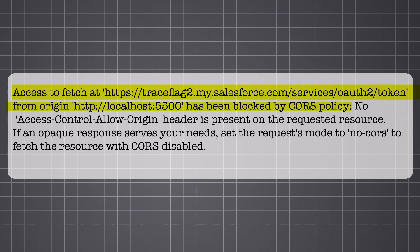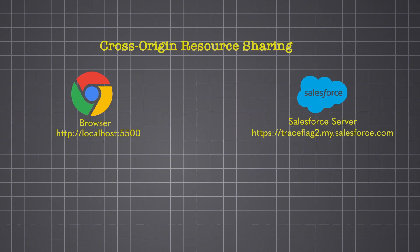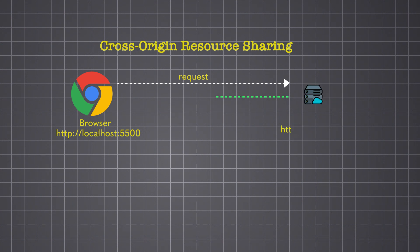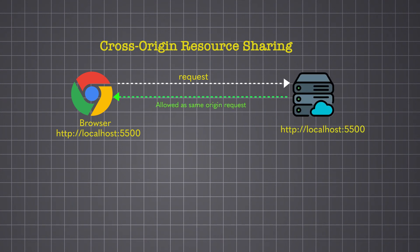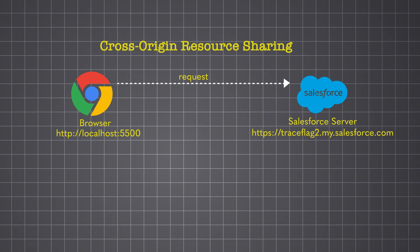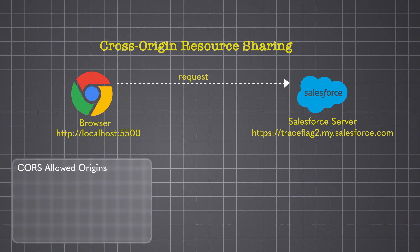To understand this error, let's understand CORS. Cross-Origin Resource Sharing is an HTTP-based header mechanism that allows a server to indicate any origins other than its own from which a browser should permit loading resources. By default, browsers only allow network requests from the same origin — which means localhost:55000 can only communicate with localhost. In order to make requests to other origins, like from localhost to Salesforce, Cross-Origin Resource Sharing must be enabled on the server. We have to configure all the origins that are allowed to make requests from different origins. Now if we add localhost:55000 as an allowed origin and make a request, it works.